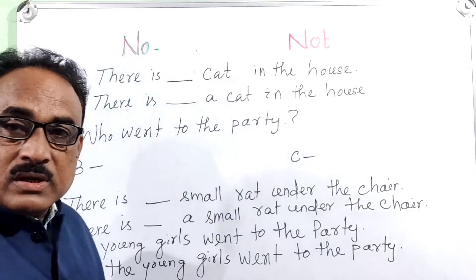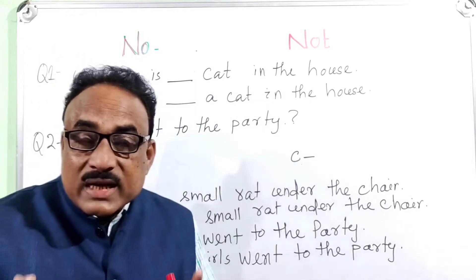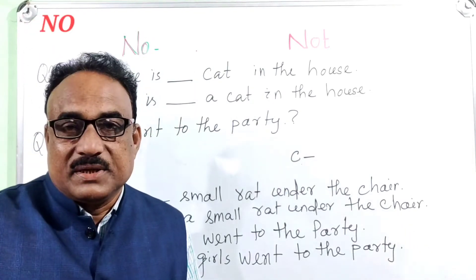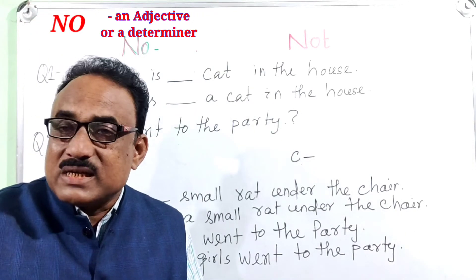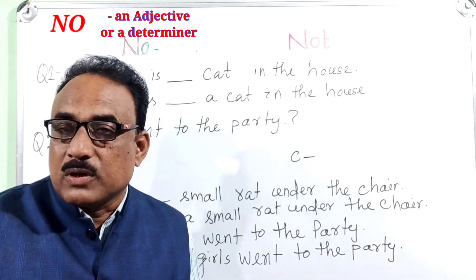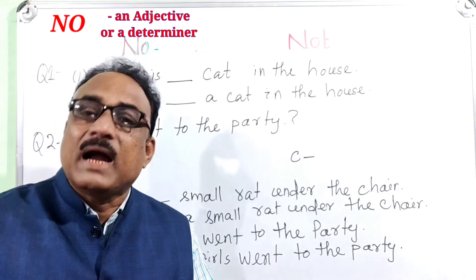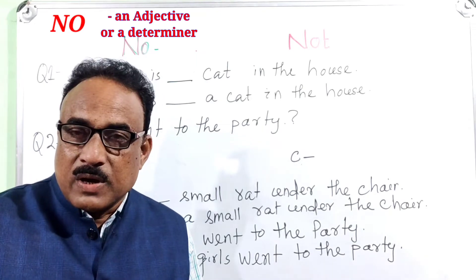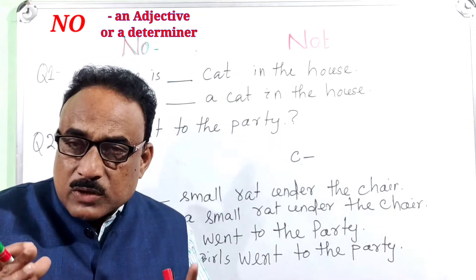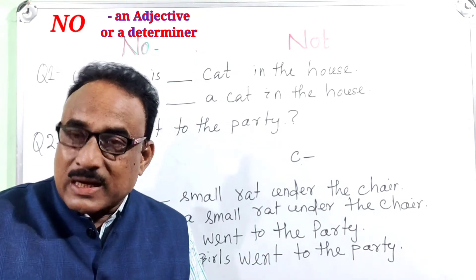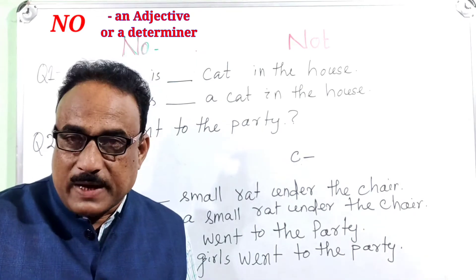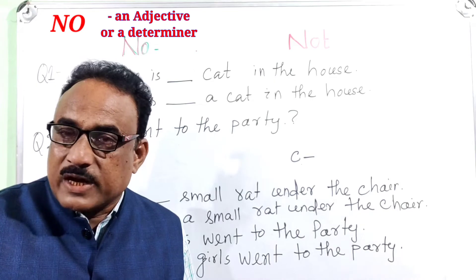You know, 'no' is an adjective — or you may say, a determiner. A determiner or adjective comes before a noun.